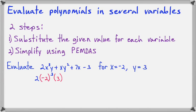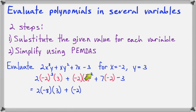Now I have 2 times negative 2 to the third times 3, plus negative 2 times 3 squared, plus 7 times negative 2 minus 3. Let's do exponents first. I have negative 2 to the third. Remember, 3 negative signs make a negative answer, and 2 to the third is 8. That will give us 2 times negative 8 times 3, and then 3 squared here is 9.